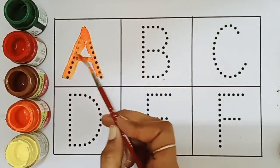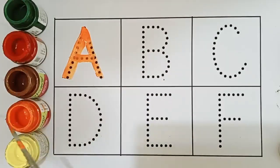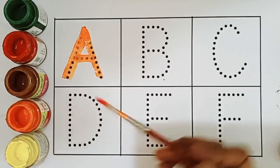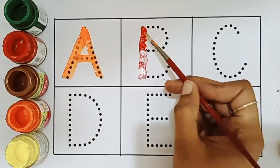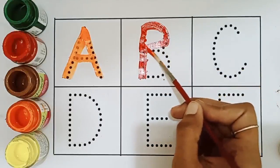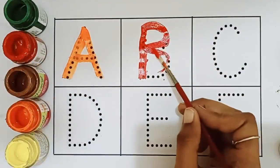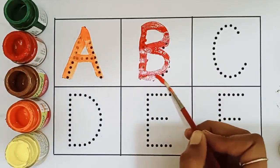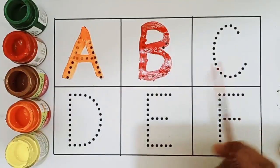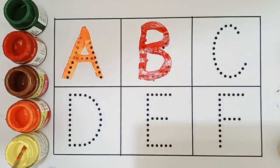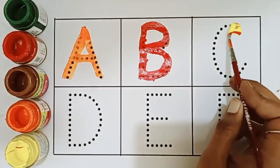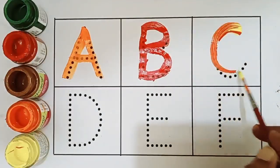A, A for apple, red color. B, B for bowl, B for bowl. C, C for cat, C for cat.